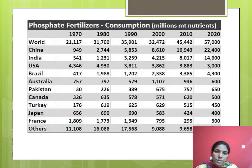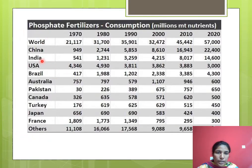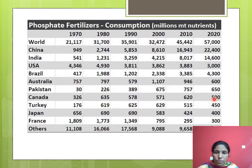Coming to the consumption of phosphatic fertilizer, data is given in millions of metric tons for different countries. In India, in the year 1970, the production of phosphatic fertilizer was 541, and after a 10-year gap, the consumption of phosphatic fertilizer increased significantly when compared to other countries.